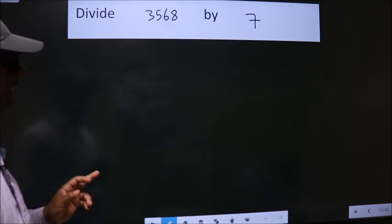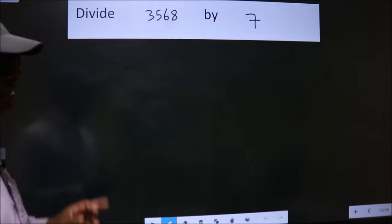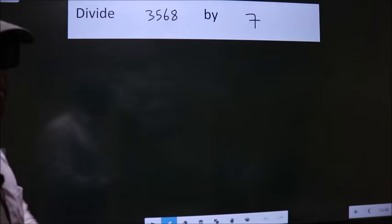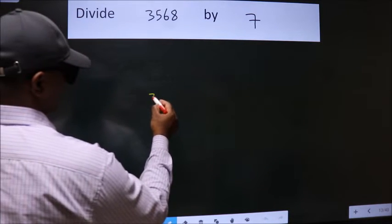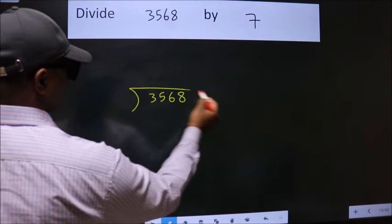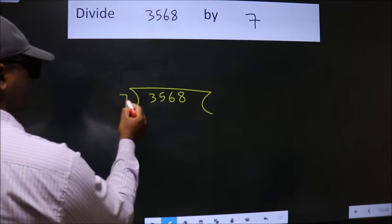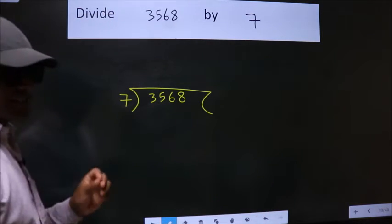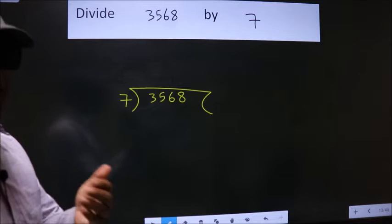Divide 3568 by 7. To do this division we should frame it in this way. 3568 here, 7 here. This is your step 1. Next.